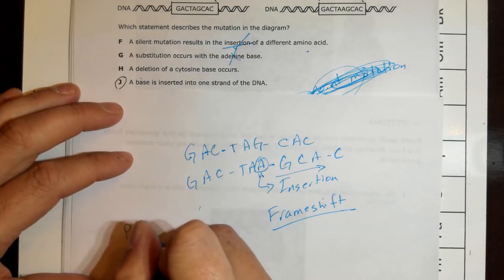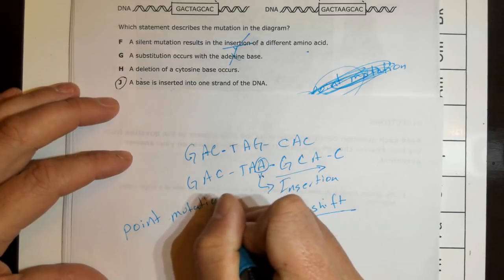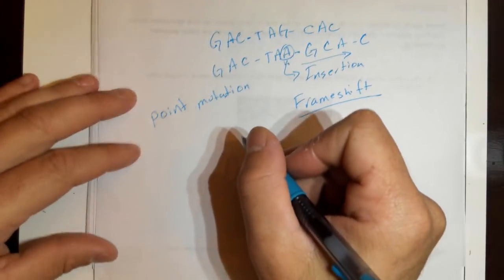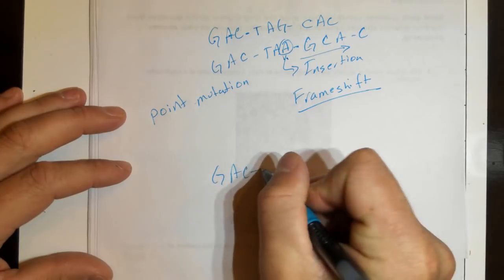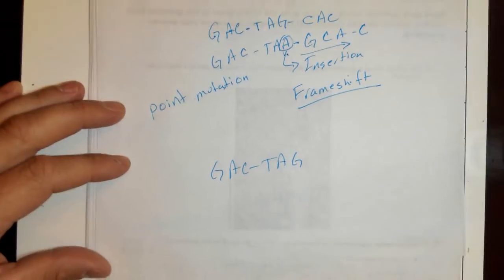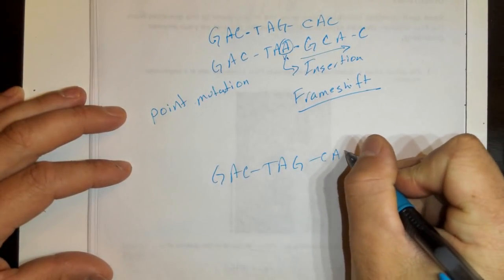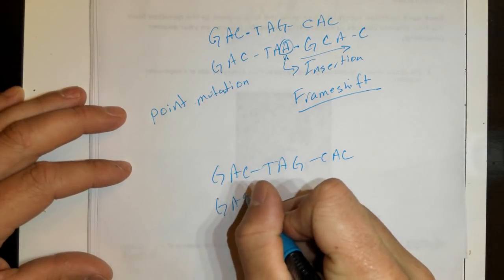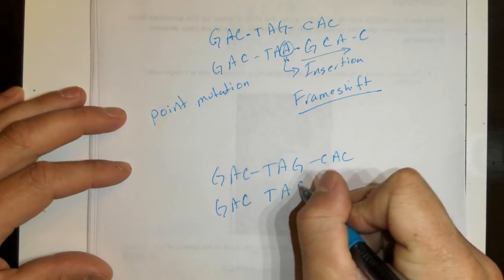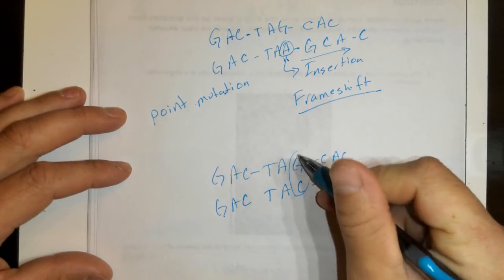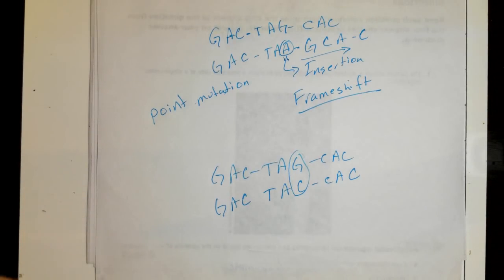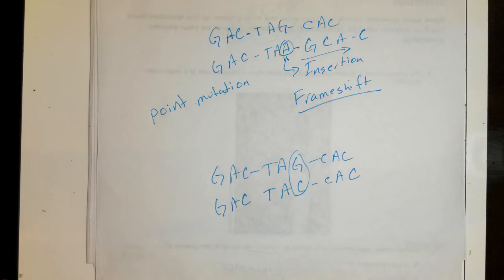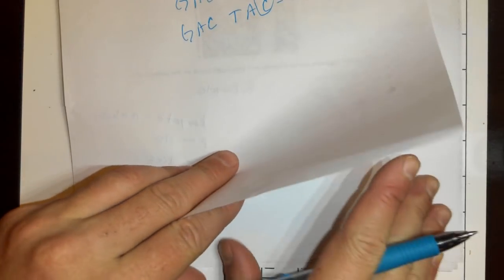Another type of mutation you need to be familiar with is a point mutation. A point mutation occurs at only one point. For example, we could have GAC, TAG, CAC. Let's rewrite one with a point mutation: GAC, instead of TAG let's write TAC, and then CAC. This would be our point mutation. It occurs just on one of the codons. Nothing before the codon is affected, nothing after is affected. The only thing that could be affected is the amino acid might change, or it could stay the same because there are multiple codons that make the same amino acid sometimes.